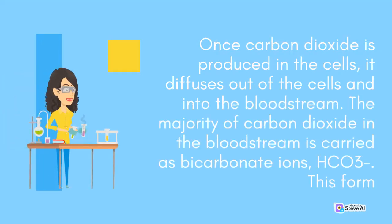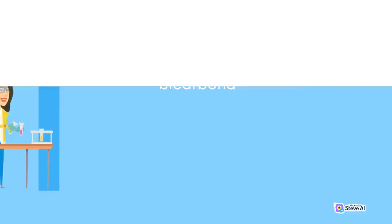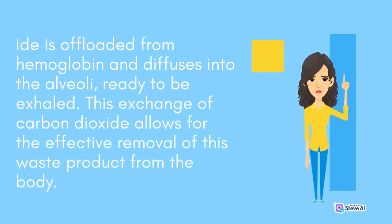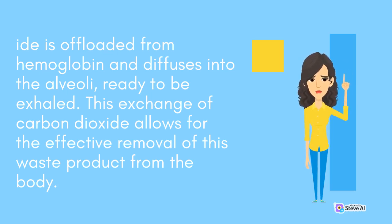Once carbon dioxide is produced in the cells, it diffuses out of the cells and into the bloodstream. The majority of carbon dioxide in the bloodstream is carried as bicarbonate ions, CO3. This form enables efficient transport across cell membranes. The bicarbonate ions are carried in the plasma and bind with hemoglobin in red blood cells for transportation. When reaching the lungs, carbon dioxide is offloaded from hemoglobin and diffuses into the alveoli, ready to be exhaled. This exchange of carbon dioxide allows for the effective removal of this waste product from the body.